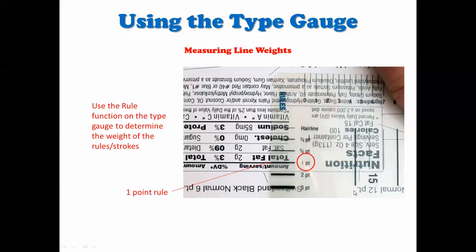All right, now when measuring the weight of the lines you do the same thing. You put the type gauge over the line and you can see this is a one-point rule. These are probably a half a point here.